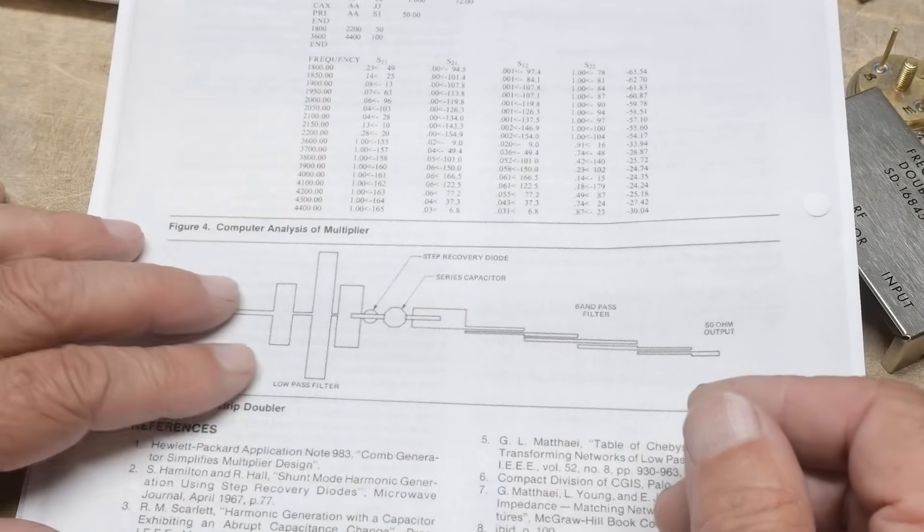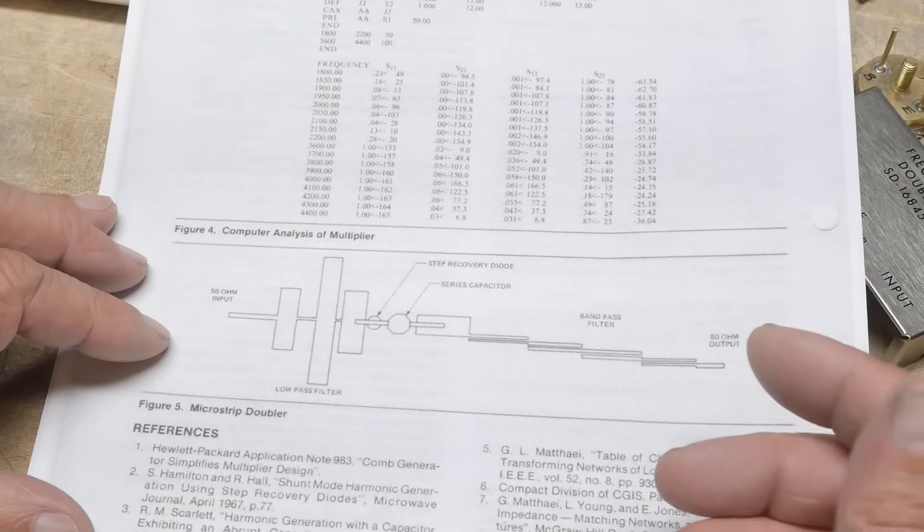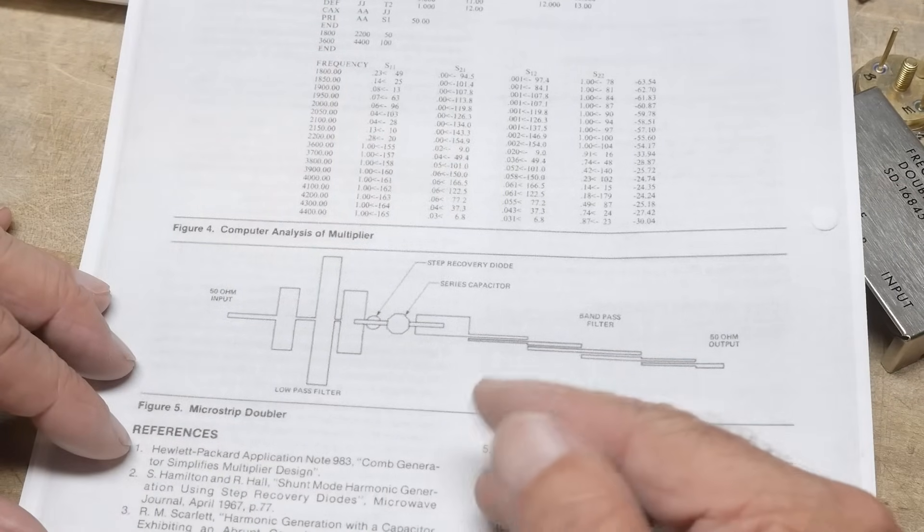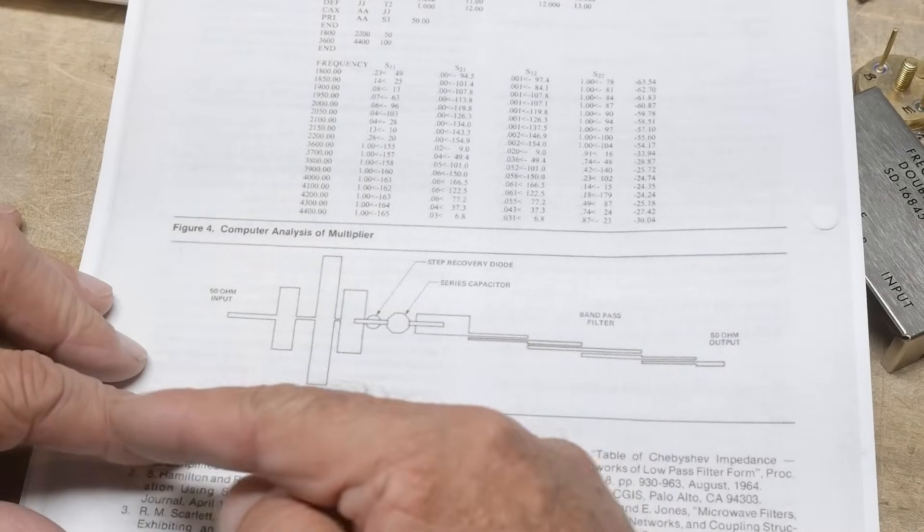If it's a good low pass filter, it will look like a wire in one direction and an open in the other direction, right? Or frequencies. At the low frequencies it'll look like a wire, and at the high frequencies it'll look like an open. Well, what happens when you have a transmission line as an open? It reflects 100% of the energy back the other way.